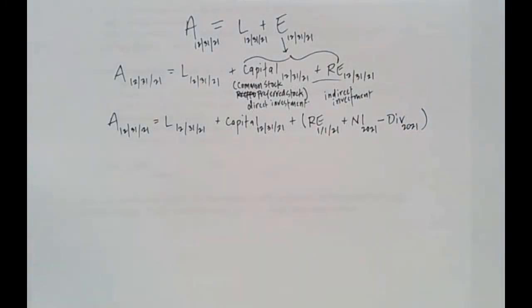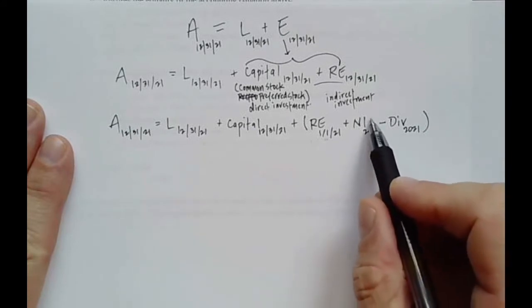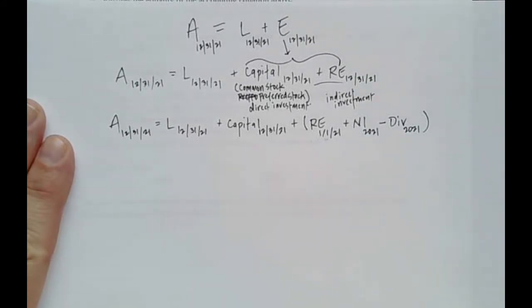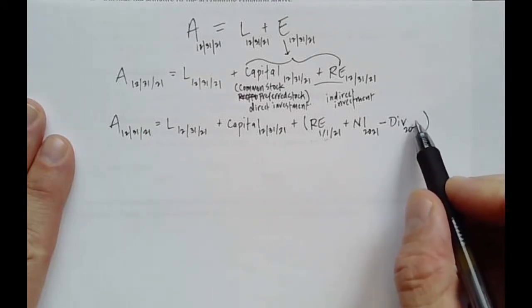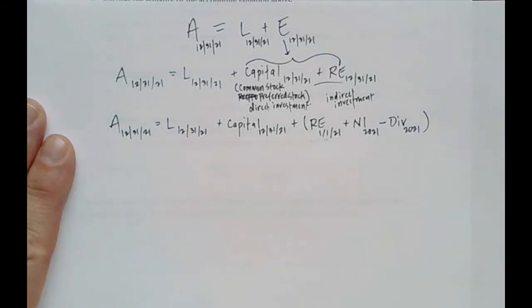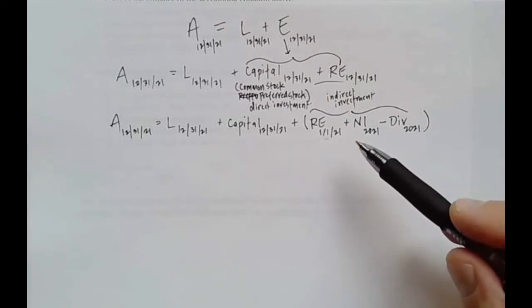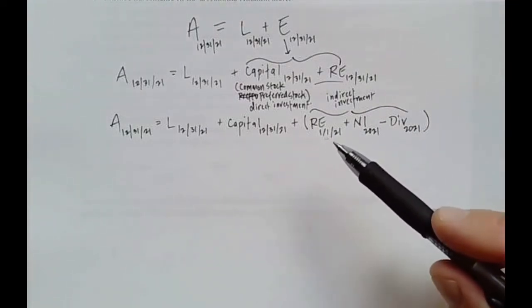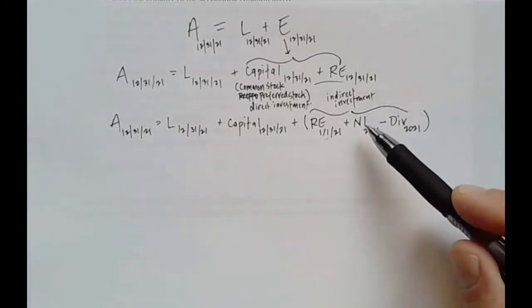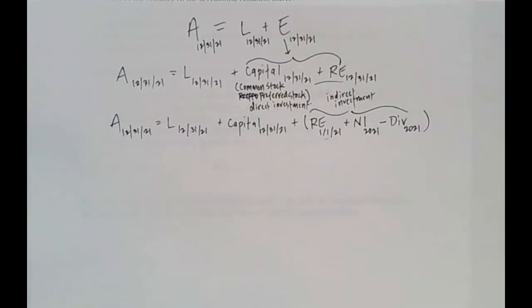Literally, these are the earnings we've retained in the corporation: we start with any beginning value, add in earnings made during the year, but subtract dividends because dividends are a distribution — we paid that out; we did not retain them. If the company is new, their beginning retained earnings would be zero, because they haven't earned any income yet. They'll only earn income as they begin their operating cycle generating revenues and expenses over a period of time.